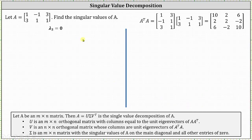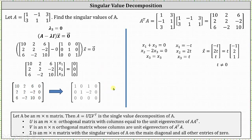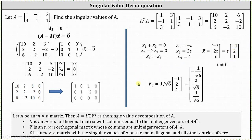For lambda sub three equals zero, we reduce the augmented matrix to find x₁ plus x₃ equals zero and x₂ minus 2x₃ equals zero; x₃ is free. Letting x₃ = t, the eigenvectors are t times (−1, 2, 1). The magnitude of (−1, 2, 1) is the square root of six, so v₃ = (−1/√6, 2/√6, 1/√6), which is the third column of matrix V.